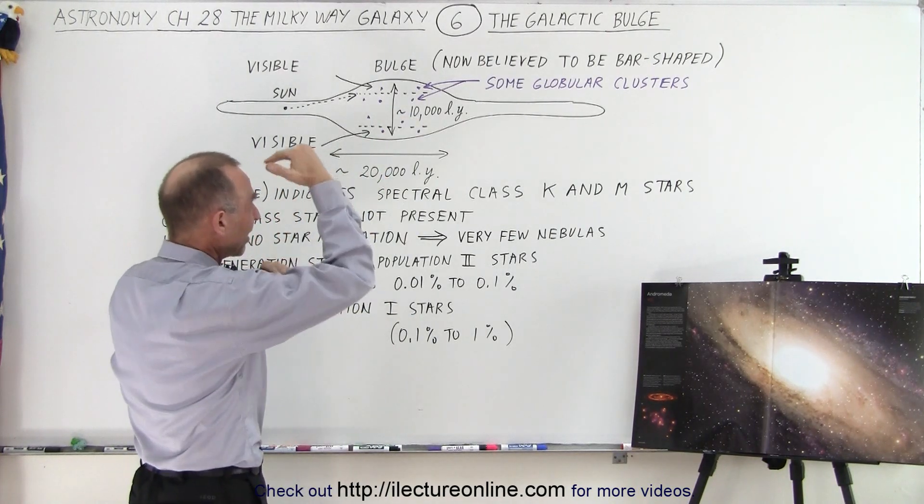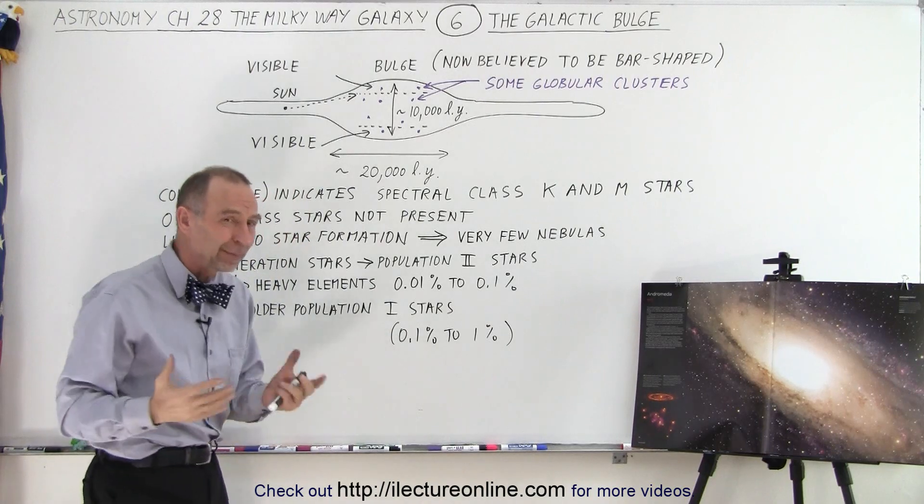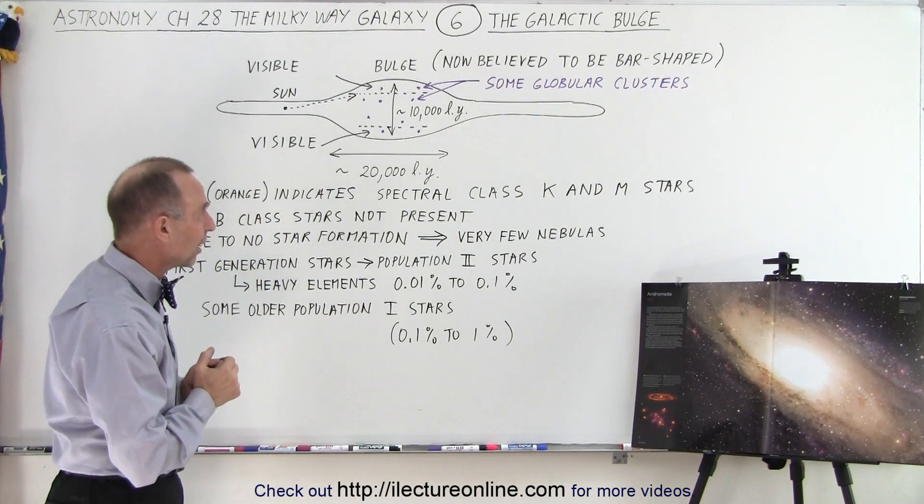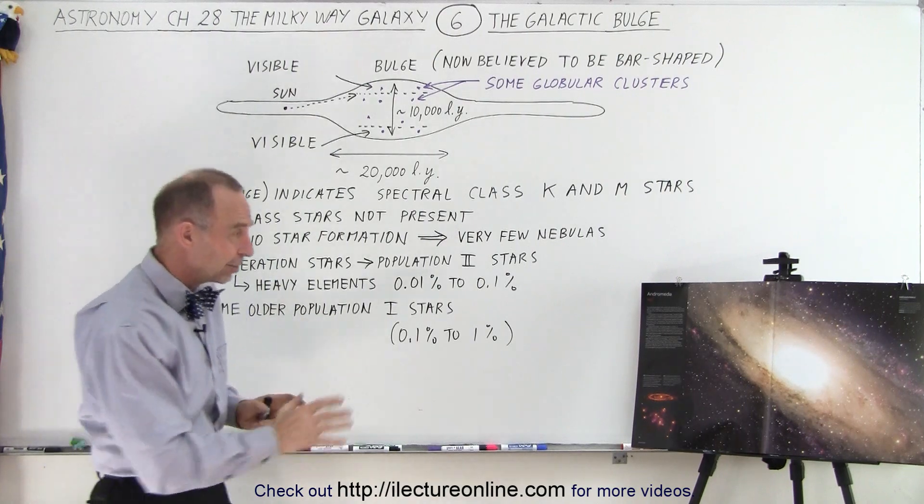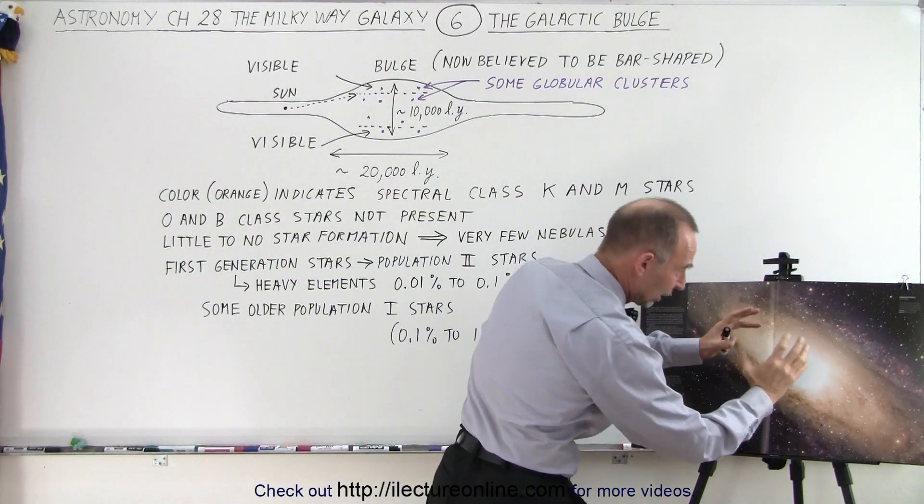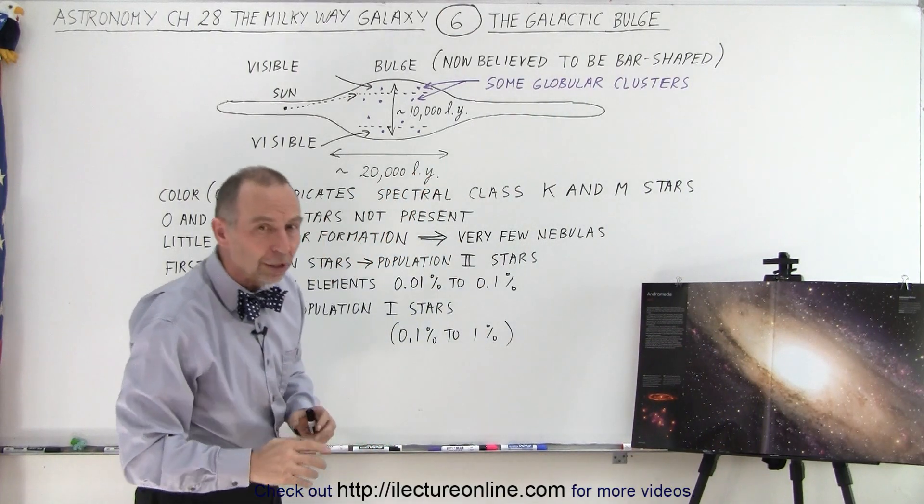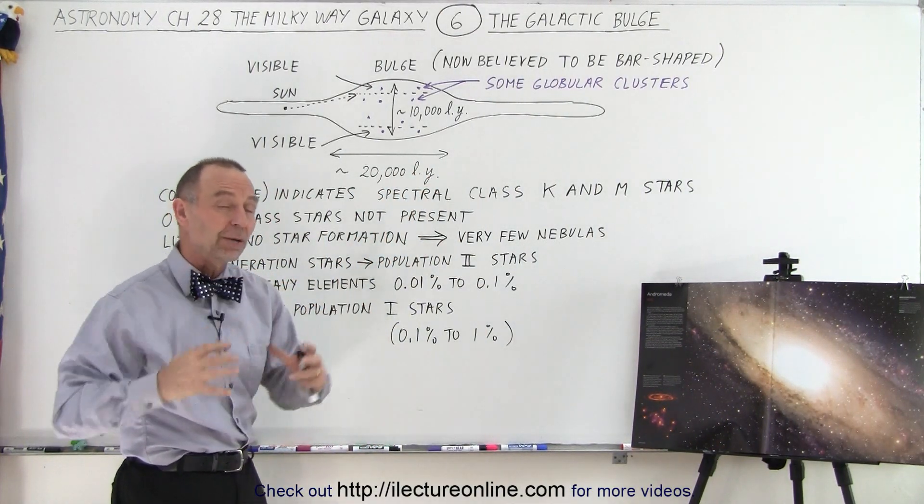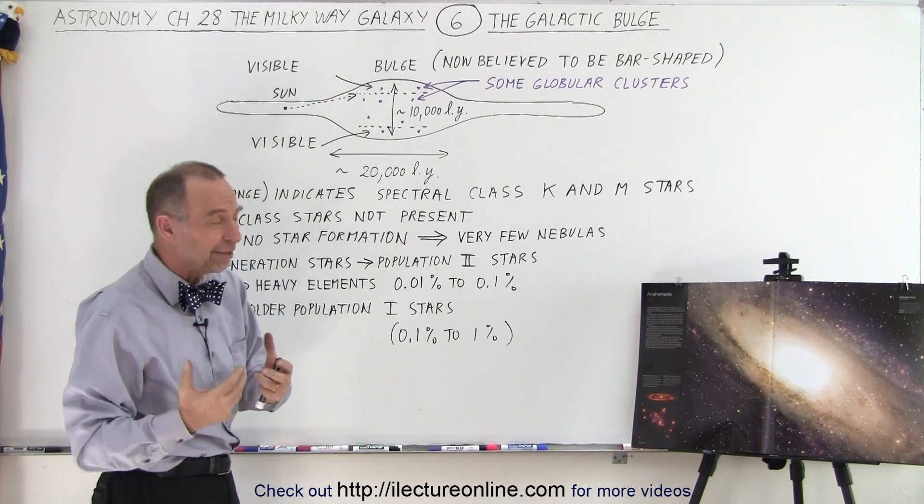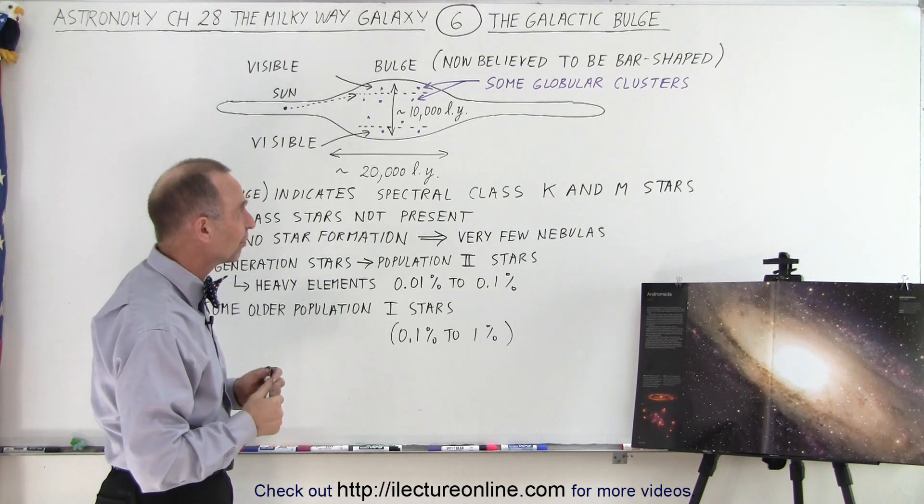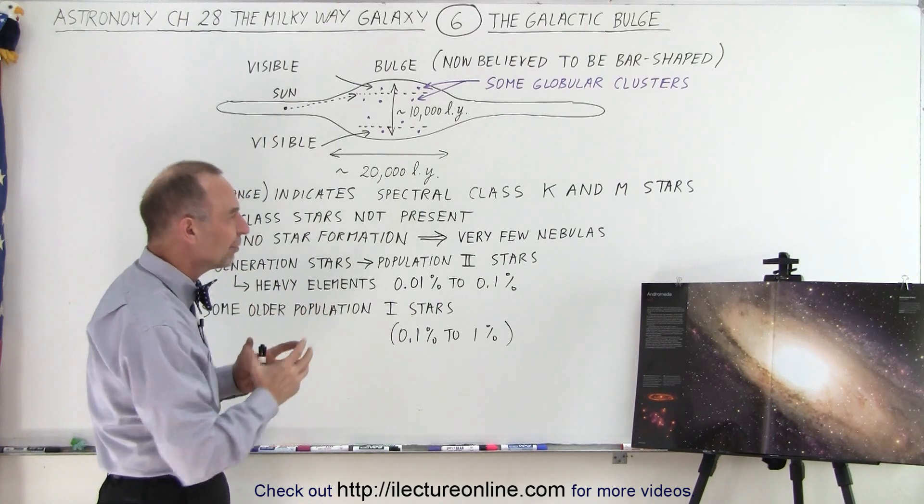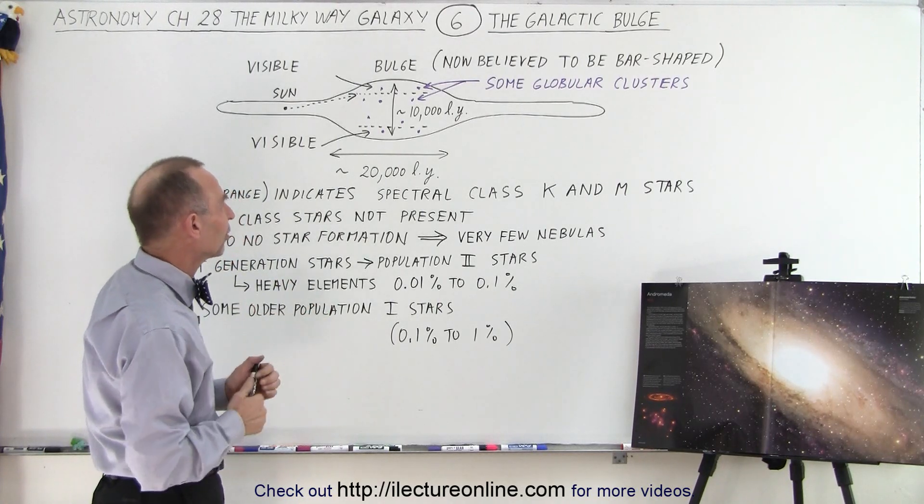The bulge is typically about 10,000 light years thick, sometimes as much as 15,000 light years, and about 20,000 light years across. Remember that unlike the Andromeda galaxy, which has more or less a spherical galactic bulge, the Milky Way galaxy has more of a bar-shaped bulge. At least that's what we believe now based upon our observations. But the overall structure and the overall content of the two would be virtually the same.